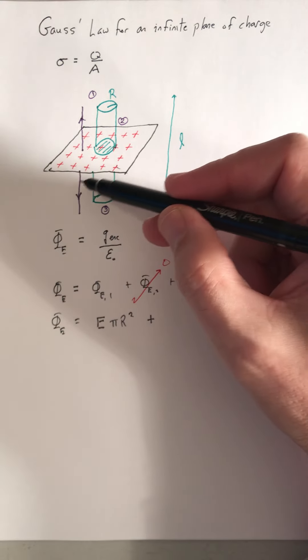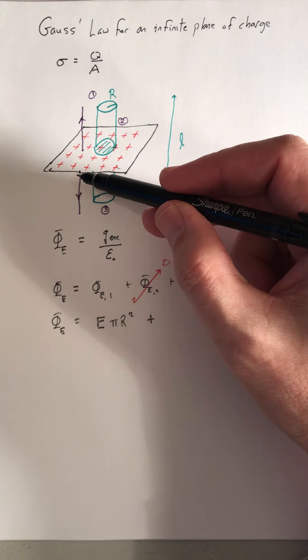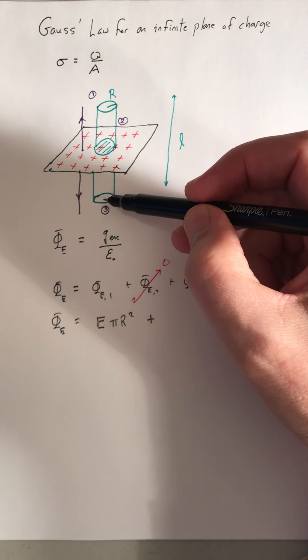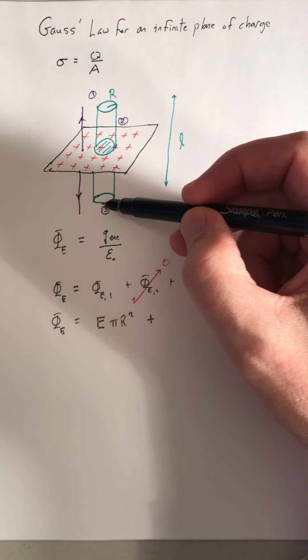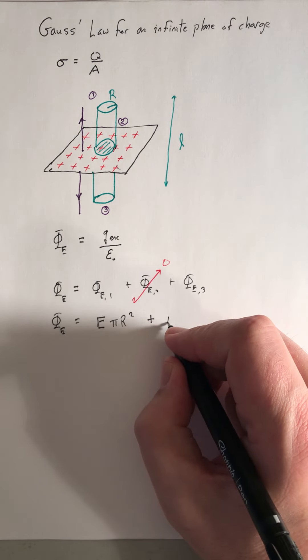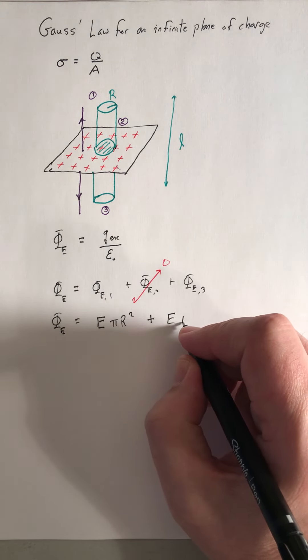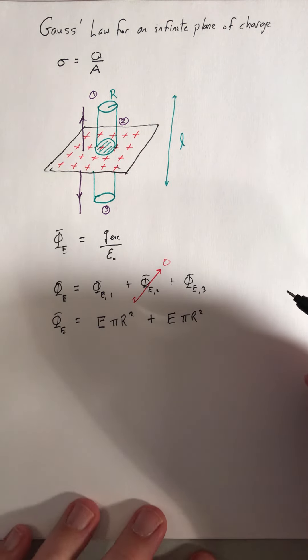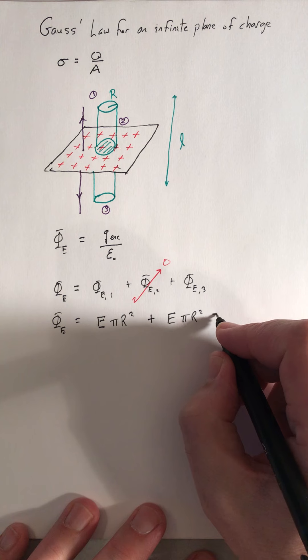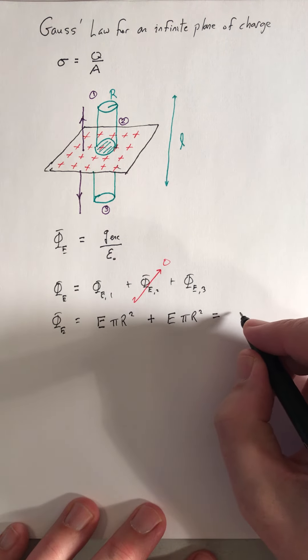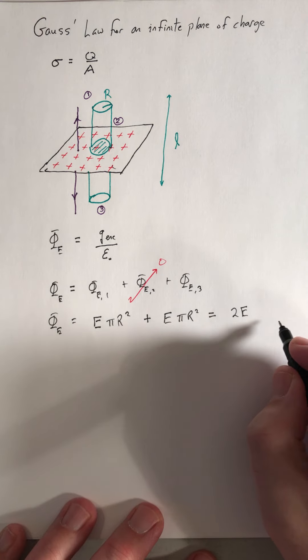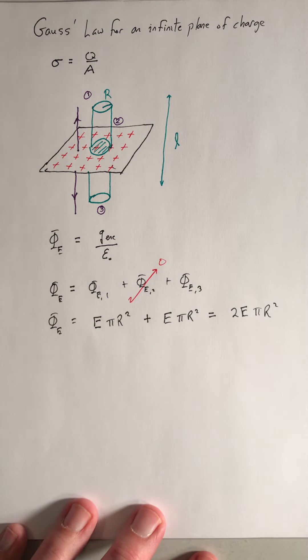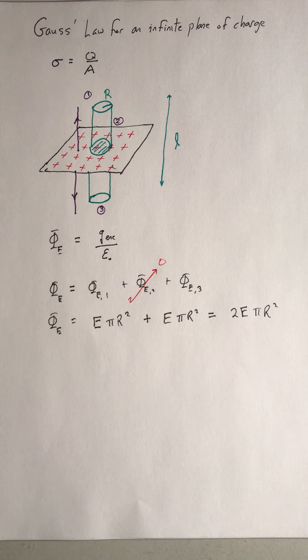And then at the bottom, the electric field lines are pointed down. The normal to the surface of surface three is also pointed down, so they're parallel to each other. So that's going to give me magnitude of the electric field times pi r squared again. And I add those two together. It'll be 2E times pi r squared.